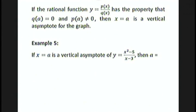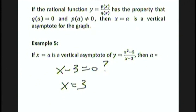In this example, if x equals a is a vertical asymptote of y equals x squared minus 5 over x minus 3, then a equals — we just have to check when the denominator equals zero, which happens at x equals 3. So a equals 3. On the ACT, you don't need to worry about checking whether the numerator is also zero at that value, because the case where it is would be too advanced for a standardized test. Just check that the denominator is zero and you will get the correct answer.